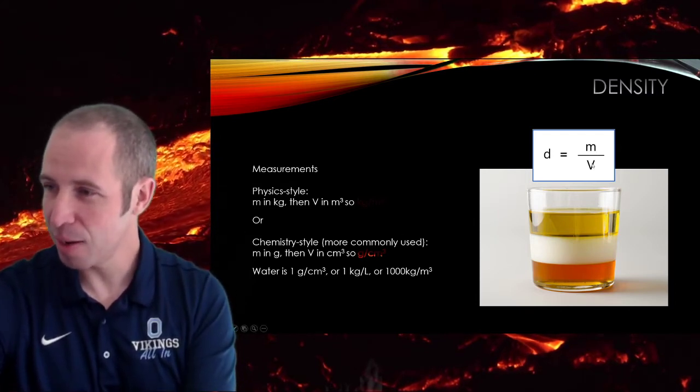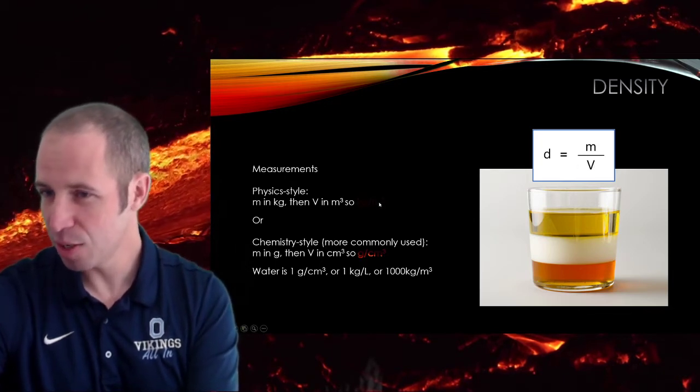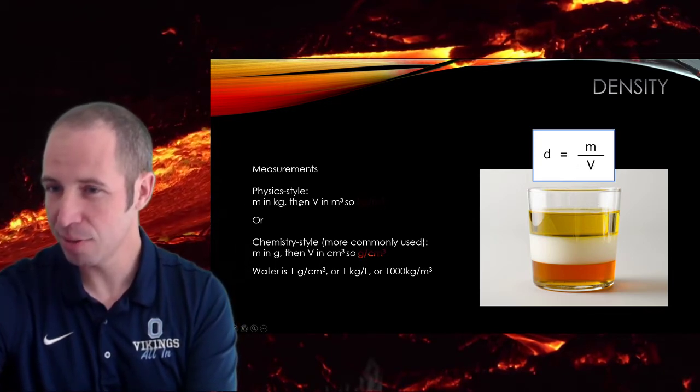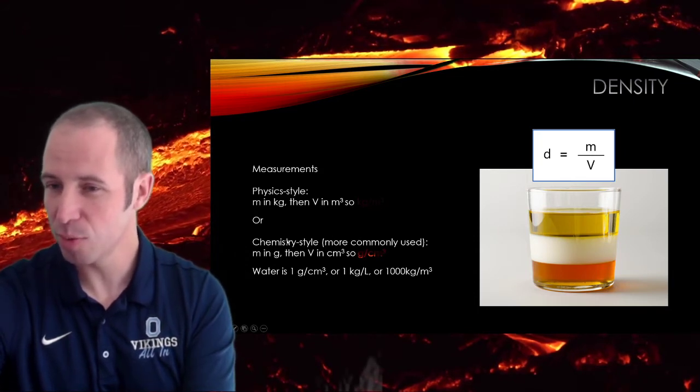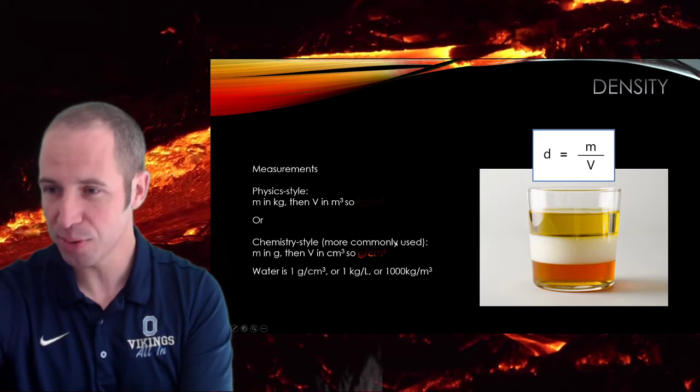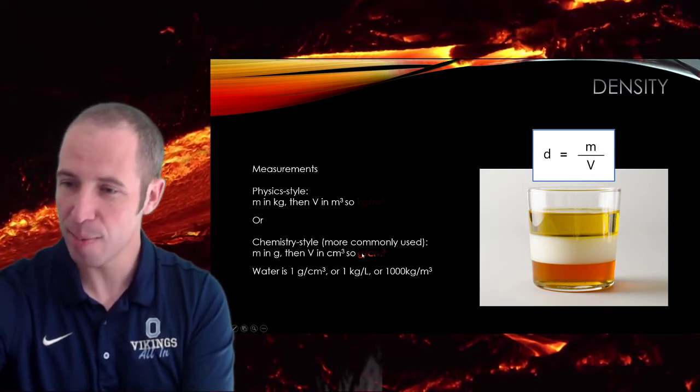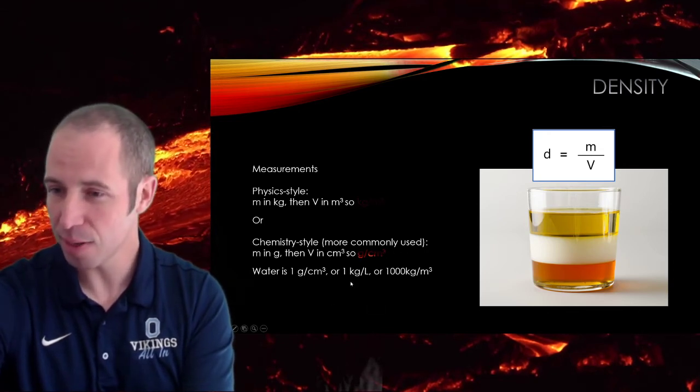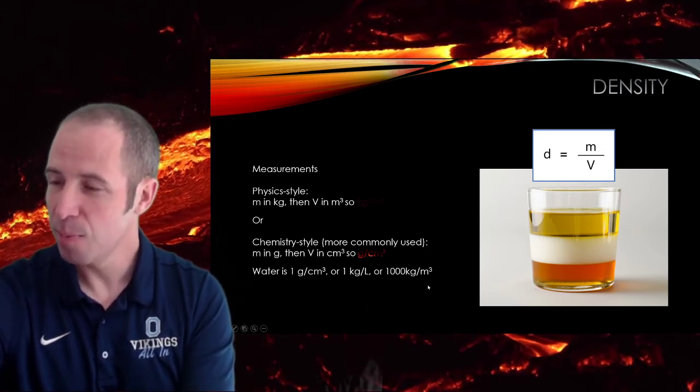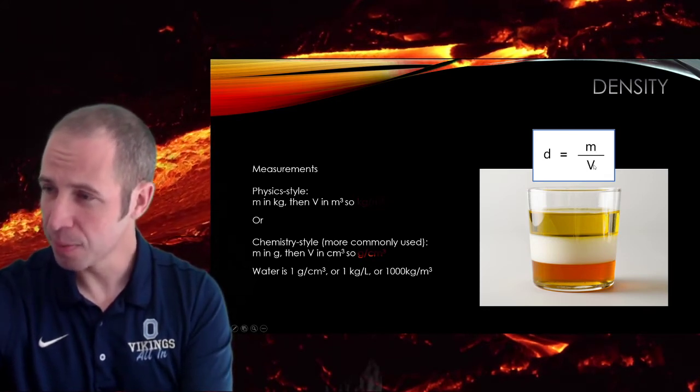Anyway, if we're doing mass divided by volume, some different ways we could measure this are kilograms per meter cubed. That would be like classic MKS physics style. The other thing we could do is grams per centimeter cubed. That's the one we use in chemistry. And this is actually the one we use most commonly in day-to-day stuff. So grams per centimeter cubed or also grams per milliliter. Those end up being the exact same thing. I've also seen kilograms per liter used. But bottom line is it's mass over volume.